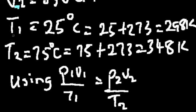We are given a temperature of 25 degrees Celsius, which if we convert to Kelvin will be 298. We are also given another temperature of 75, which when we convert to Kelvin will be 348 Kelvin.